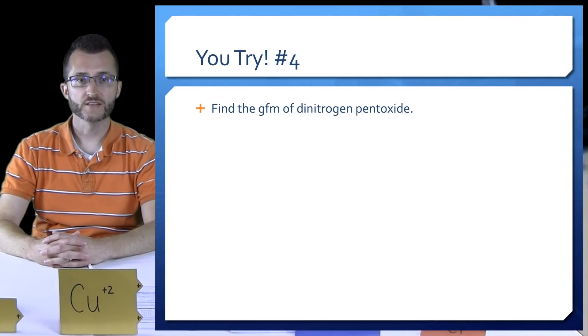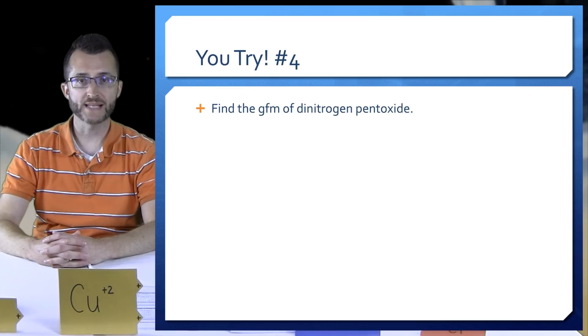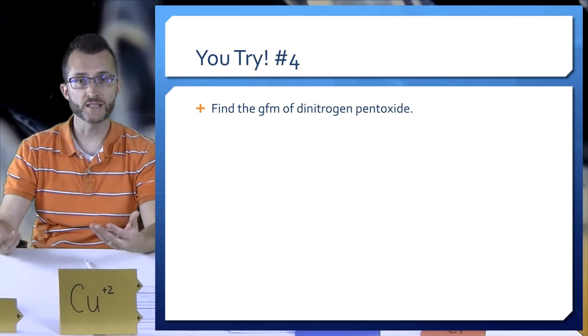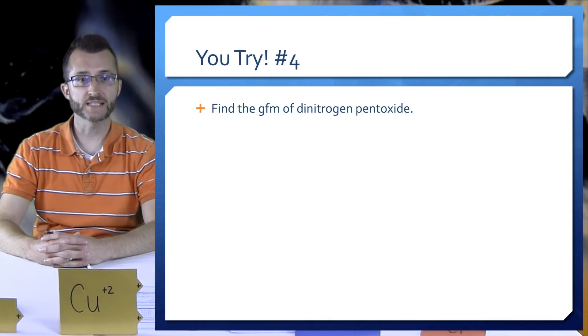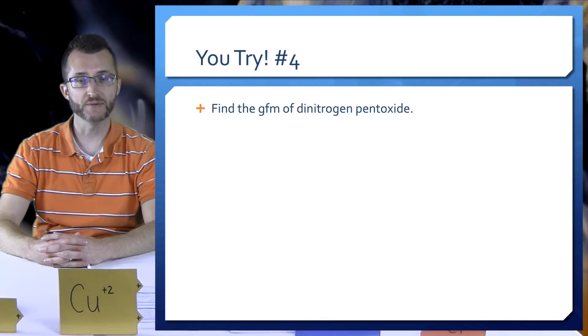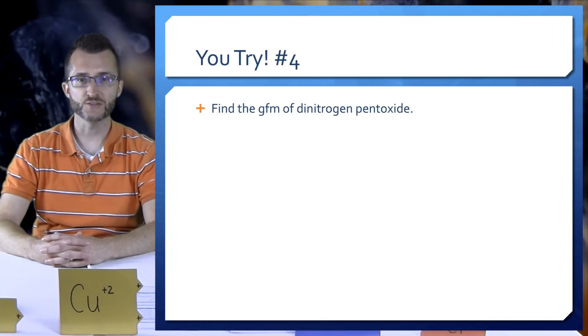You try number four. Find the GFM of dinitrogen pentoxide. Again, write your formula. Show all your work looking up atomic masses on your periodic table, but this time using the units grams.